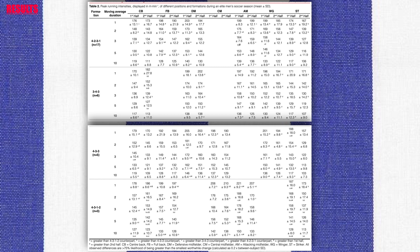Distance covered and average speed for attacking midfielders were greater in both the 4-3-1-2 and 4-2-3-1 formations for both halves compared to the 3-4-3 formation. Similarly, strikers covered greater overall distance at a higher average speed in both halves in the 4-3-1-2 formation than the 4-2-3-1 and 4-3-3 formations.